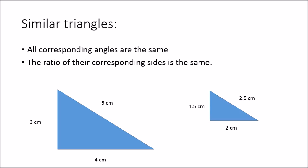So as I've said, similar triangles, all corresponding angles are the same, and the ratio of their corresponding sides is the same, and I'll show you what I mean by that.